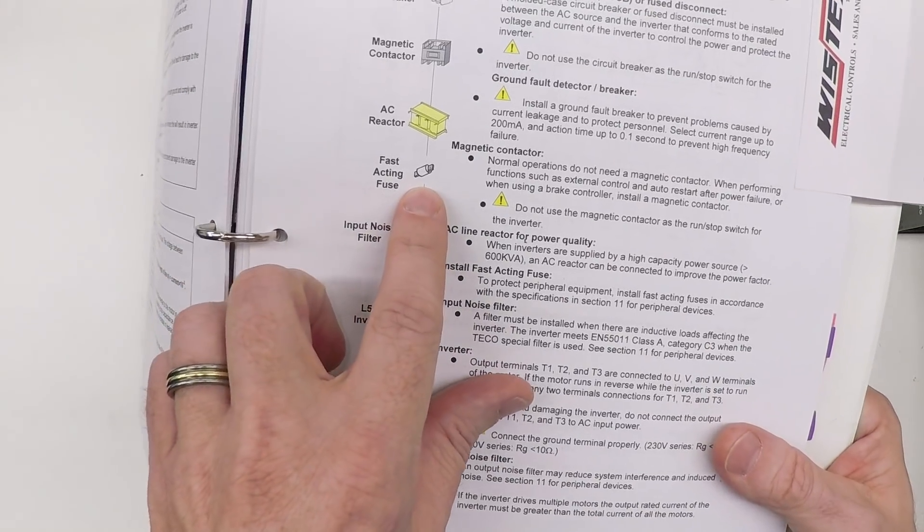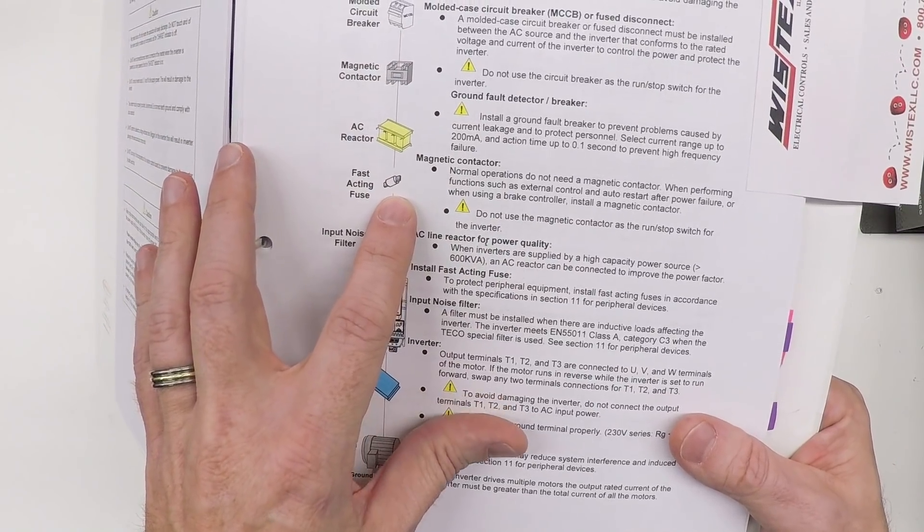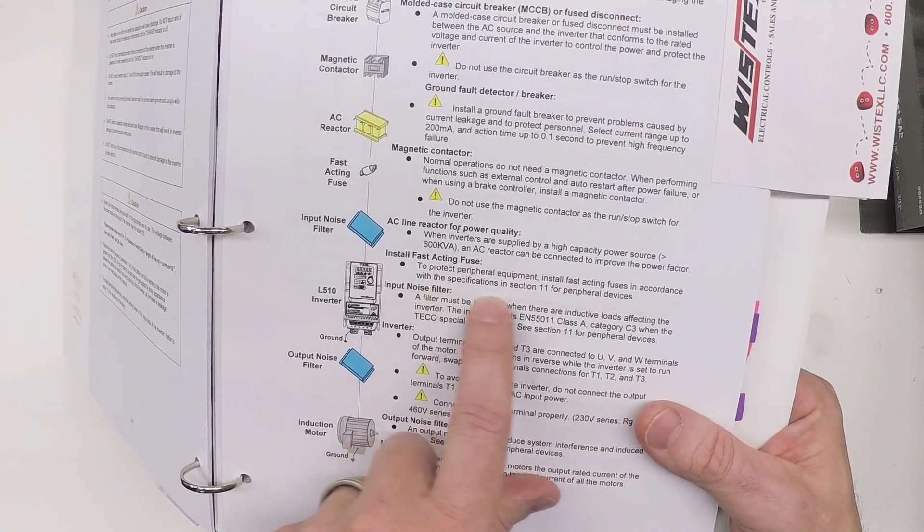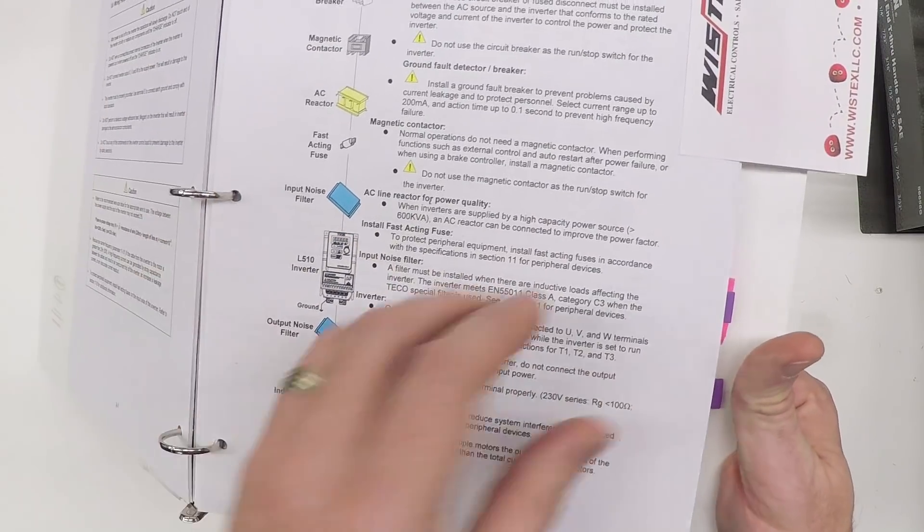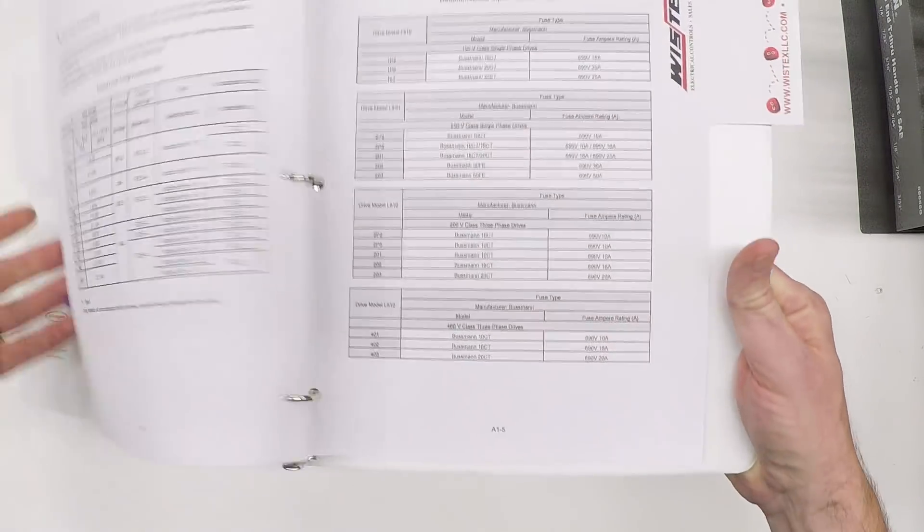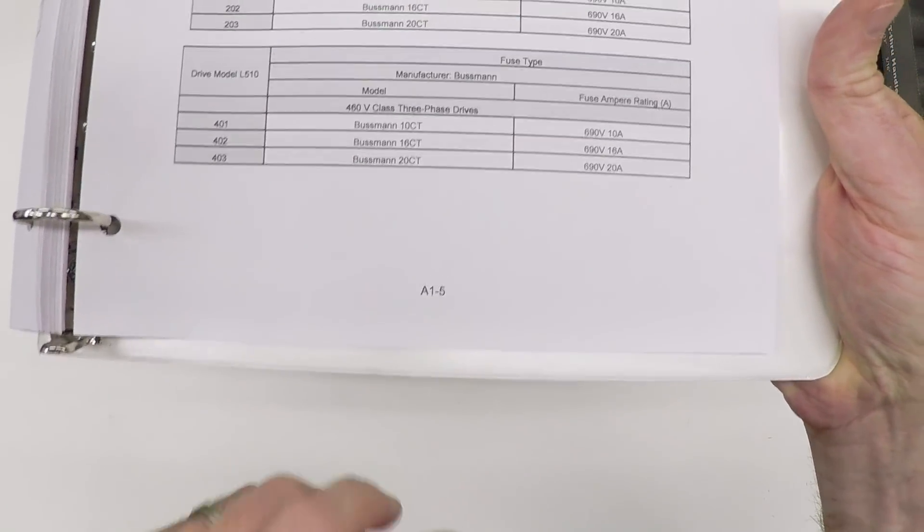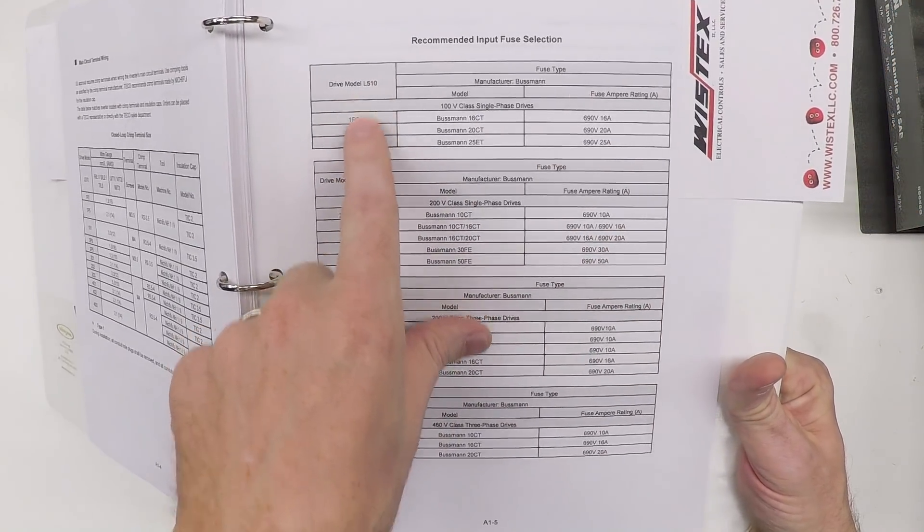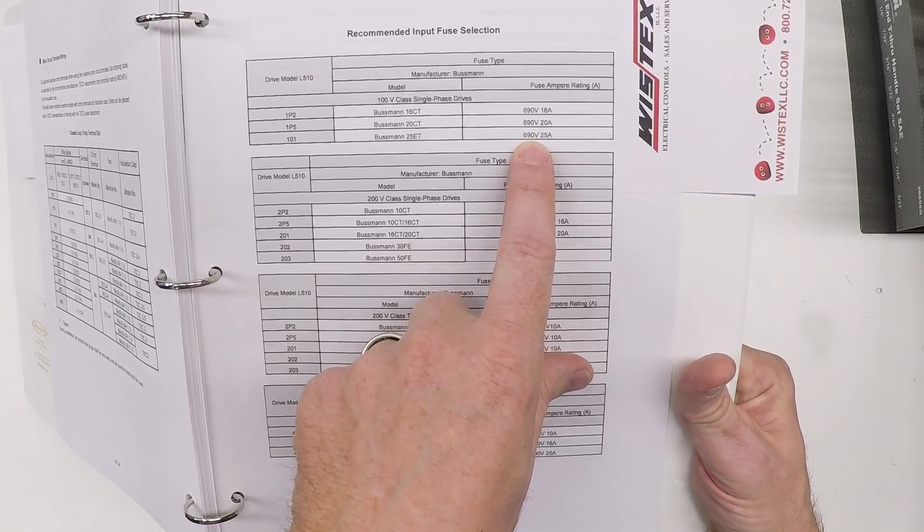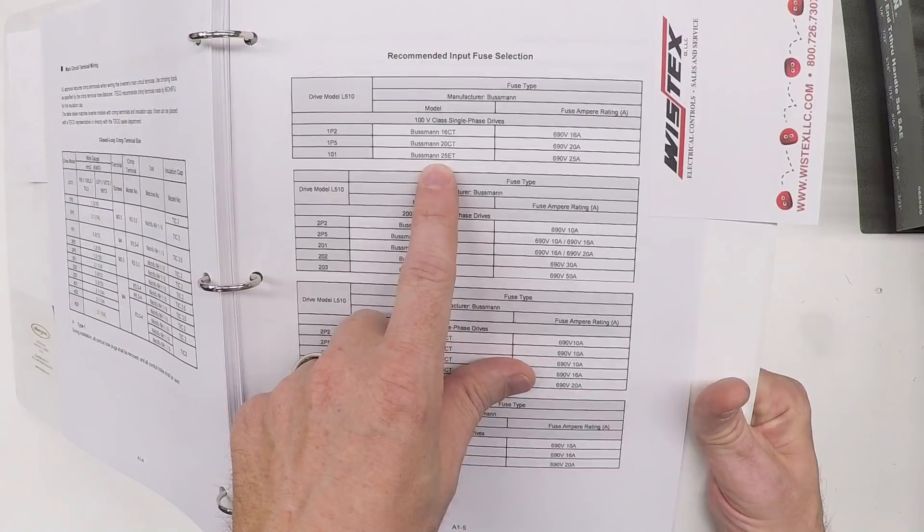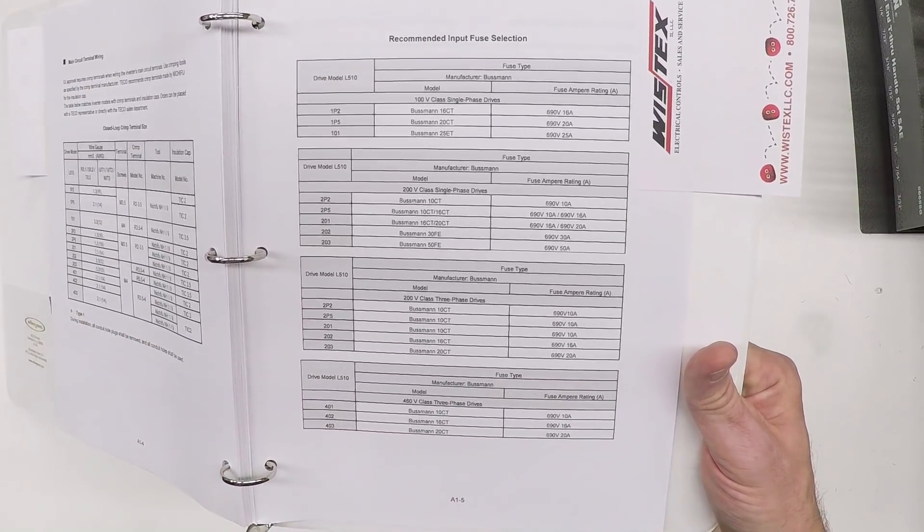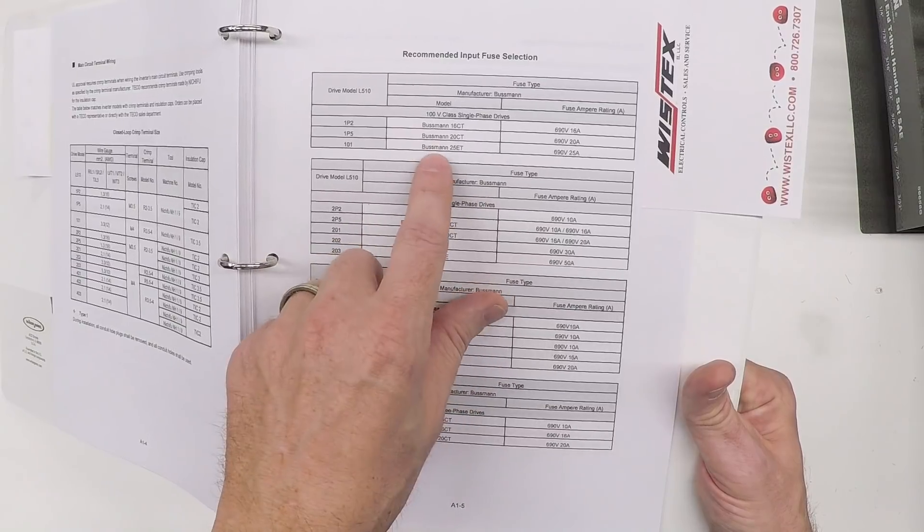Now, let's talk about this fast acting fuse. If you already have a circuit breaker, why do you need a fuse? Well, what it says here is to protect peripheral equipment, install fast acting fuses in accordance with the specifications in section 11. Now, this manual has no section 11, but there's one clue: fast acting. And if you actually dig here in the back, you'll find it not in section 11, but in section A1, page five, they have the spec. This is the L510 101 and they want a Busman 25 ET, which is a 690 volt fuse, 25 amps. I went and looked at these and this is a British standard two stud mount fuse, which is really inconvenient for the things I can get locally and the mounting I have in the box here. So I found an equivalent fuse.